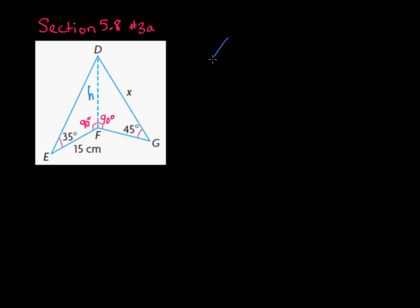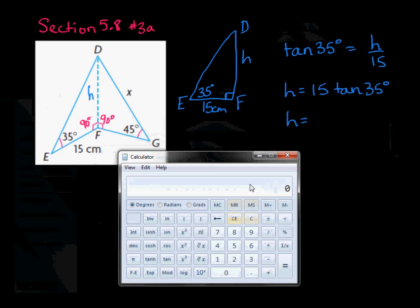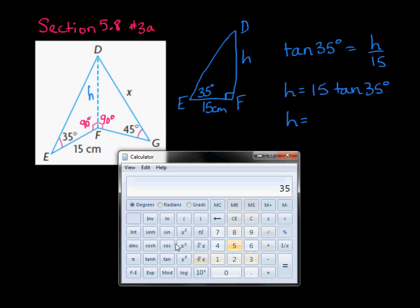Let's draw triangle DEF separately. Here we have D, E, and F as the 90-degree angle. We're solving for h, the angle at D is 35 degrees, and the side EF is 15 centimeters. Based on the reference angle of 35°, h is the opposite side and 15 is adjacent, so we use the tangent ratio: tan(35°) = h/15, meaning h = 15 × tan(35°) ≈ 10.5.